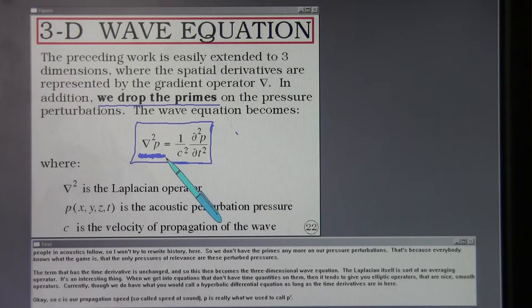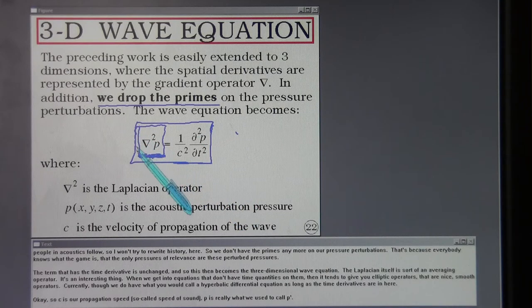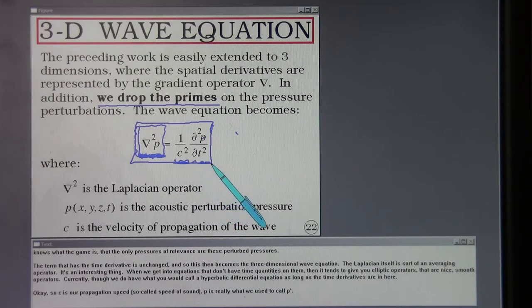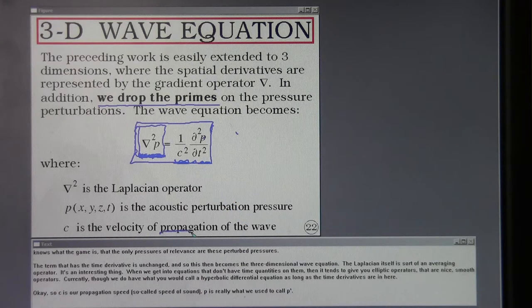When we get into equations that don't have time quantities on them then it tends to give you elliptic operators that are nice smooth operators. Currently though we do have what would you call a hyperbolic differential equation as long as the time derivatives are in here. So C is our propagation speed, the so-called speed of sound. P is really what we used to call P prime.